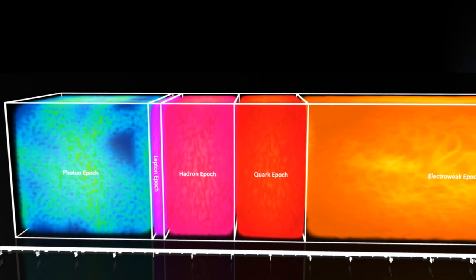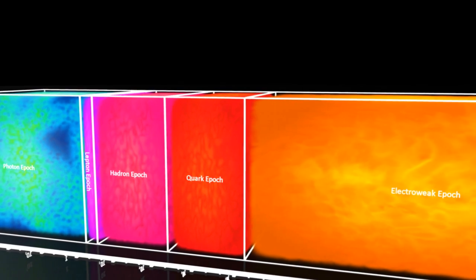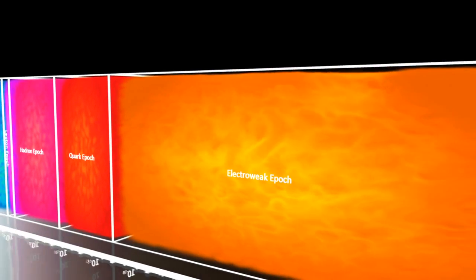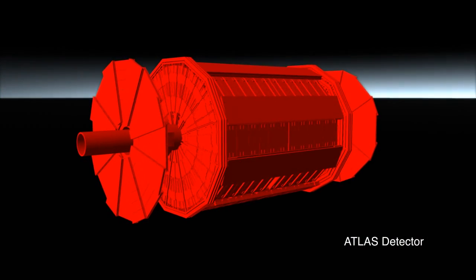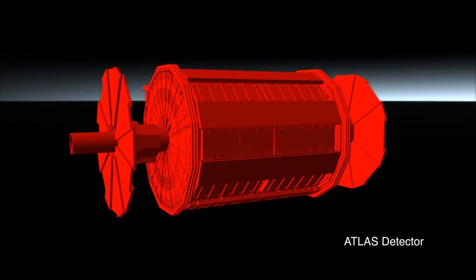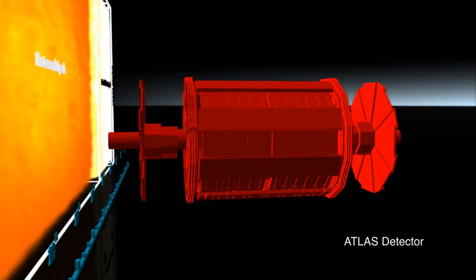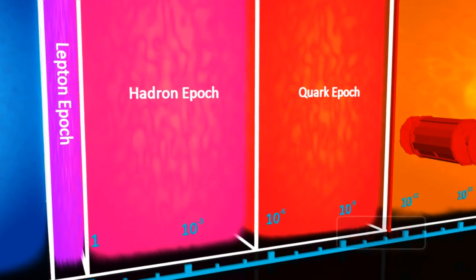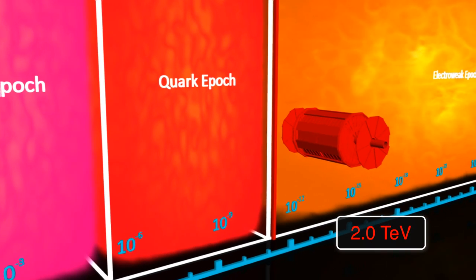Particle detectors are then employed to capture these events to help us learn more about what the universe was like in these early times. ATLAS is such a detector at the Large Hadron Collider. Late in 2009, the LHC and the ATLAS detector broke world records by creating and detecting the highest energy collisions ever made.